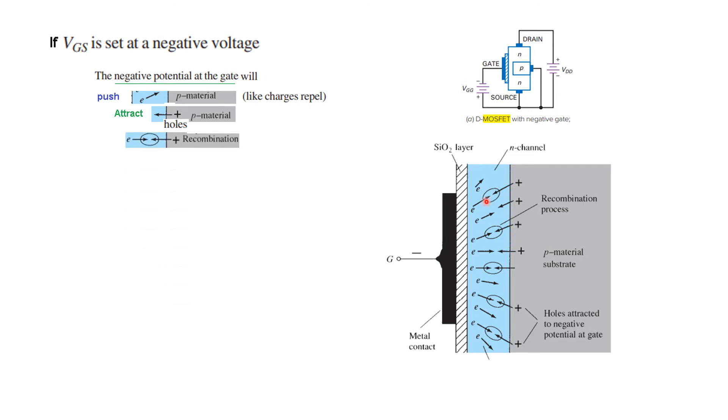Then it will also attract the positive or the positive ions of the holes in the P-type material towards this. And the result will be there will be recombination. So electrons going from here and holes coming from here they will recombine and so in this region there will be a shortage of electrons. That is why it is now in depletion mode.